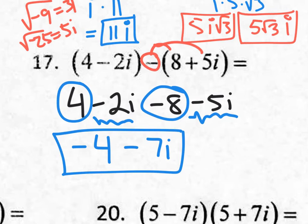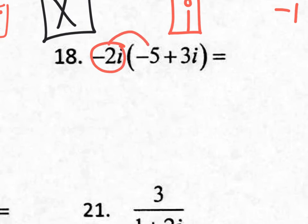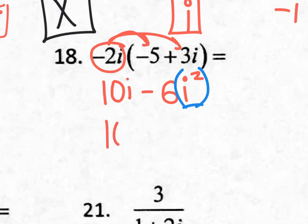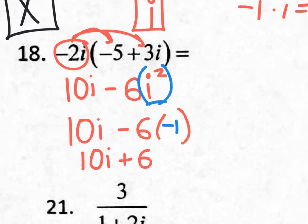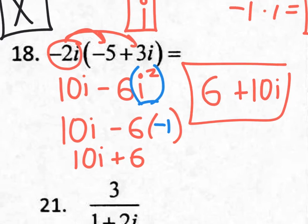The only catch is if you ever have an i squared, that's when it changes to negative 1. Looking at number 18: distributing negative 2i times negative 5 gives positive 10i. Then negative 2i times 3i gives negative 6i squared. This i squared needs to be replaced with negative 1, so you really have 10i minus 6 times negative 1, which is 10i plus 6. Writing the complex number with the real part first, the final answer is 6 plus 10i.